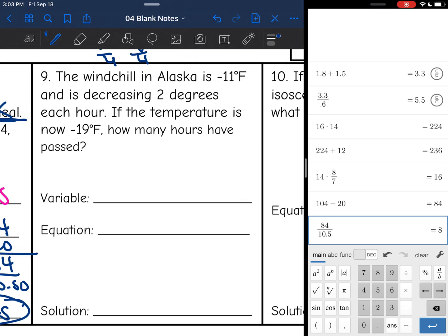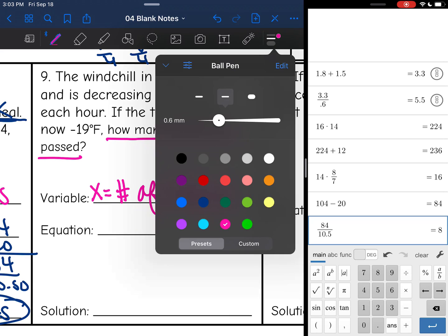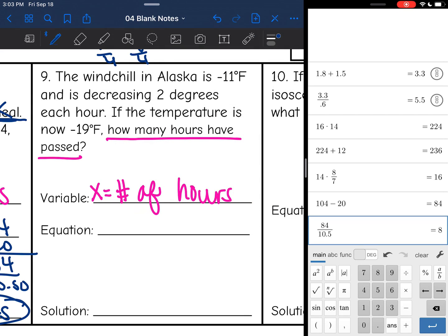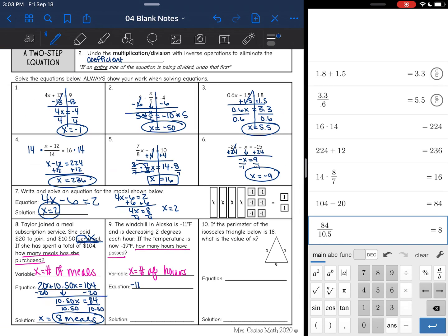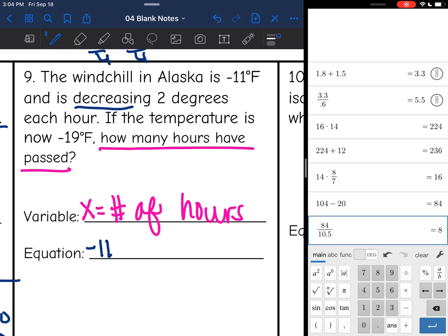Okay, number 9, it says the windchill in Alaska is negative 11 degrees and is decreasing 2 degrees each hour. If the temperature is now negative 19 degrees Fahrenheit, how many hours have passed? So remember the variable is what we're looking for, which we can tell by the question, how many hours have passed? So x will be the number of hours.